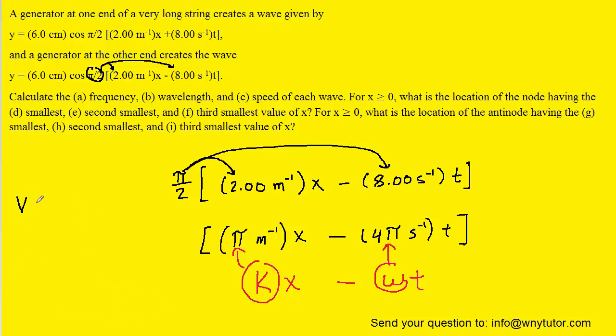For part C, we know that the speed of the wave is the product of the wavelength and the frequency. So we could just plug in the values we just determined. And when we simplify that, we get 4 meters per second. So that would be the correct speed and answer to part C.